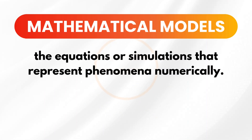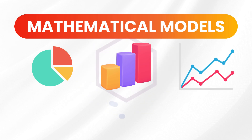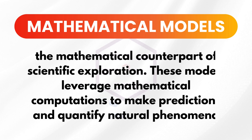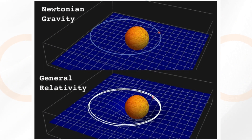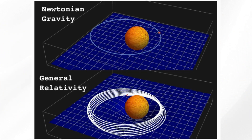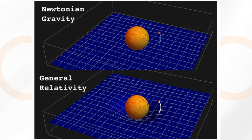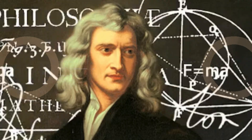Next on the list are mathematical models. These are equations or simulations that represent phenomena numerically. These include graphs such as a pie graph, bar graph, line graph, coordinate plane, and Venn diagram. Mathematical models are the mathematical counterpart of scientific exploration, leveraging mathematical computations to make predictions and quantify natural phenomena. A classic example is Sir Isaac Newton's law of gravitation established in 1687. This mathematical model eloquently describes the effects of gravitational force using the language of mathematics, allowing for precise predictions of celestial motions and interactions.